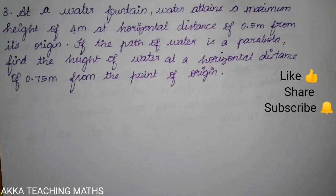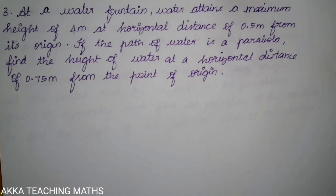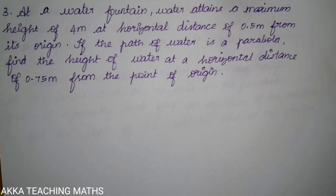Hi friends, welcome to Akka Teaching Max. Third question: at your water fountain, water attains a maximum height of 4 meters at a horizontal distance of 0.5 meters from its origin. If the path of the water is a parabola, find the height of the water at a horizontal distance of 0.75 meters from the point of origin.